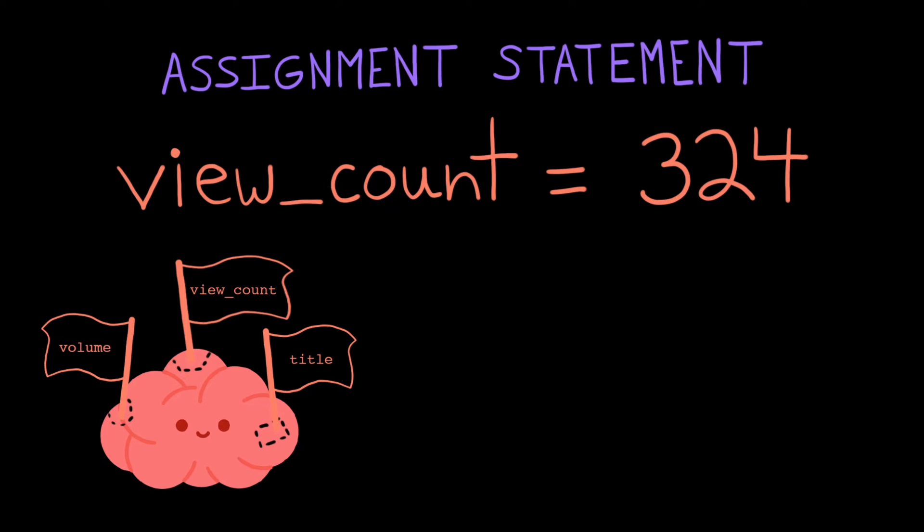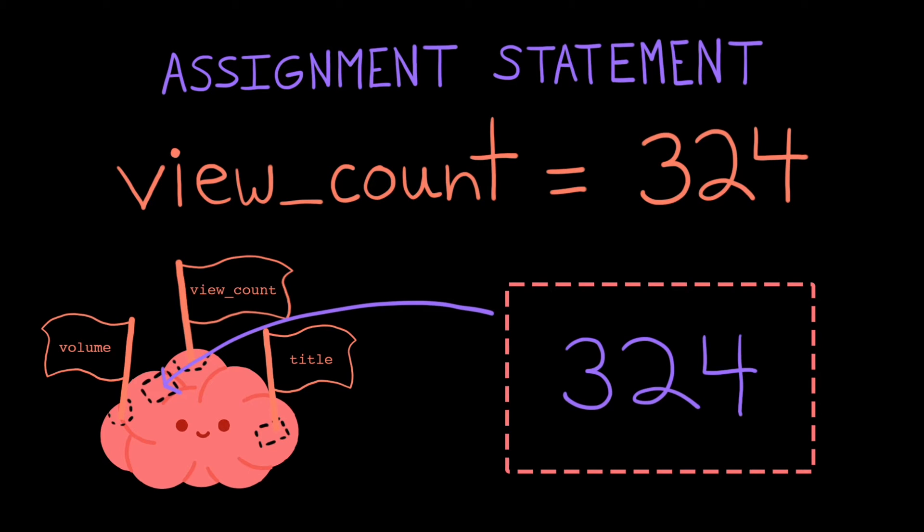If it does find that label, it will allocate a new chunk of memory, store the new value there, and take that label from the old location and move it to point to the new location. That old location is now unreachable. There's no way for you as the programmer to ask about that location in memory anymore, because it doesn't have a name. There's no need for the computer to keep this around, so it just erases it.